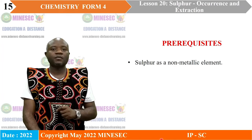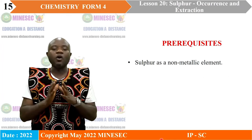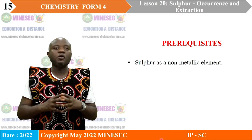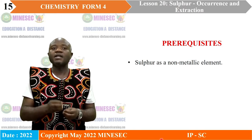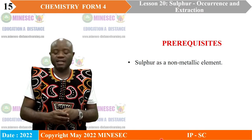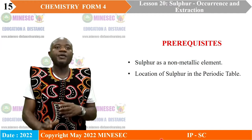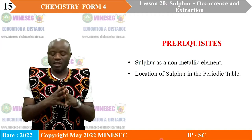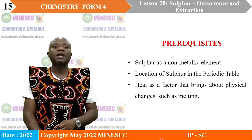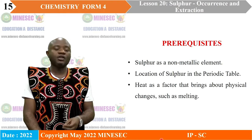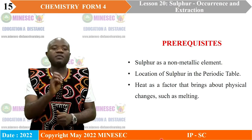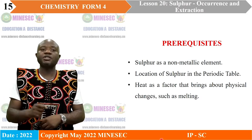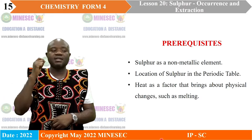Prerequisites: You can understand this lesson because you are already aware that sulfur is a non-metallic element, you already know its location in the periodic table, and you know that heat is one of the factors that could bring about a physical change such as melting.